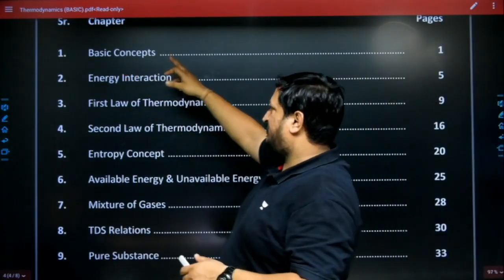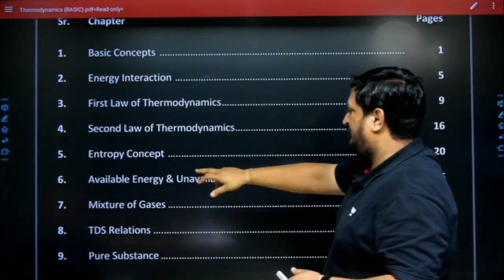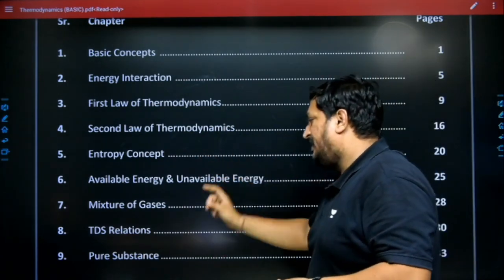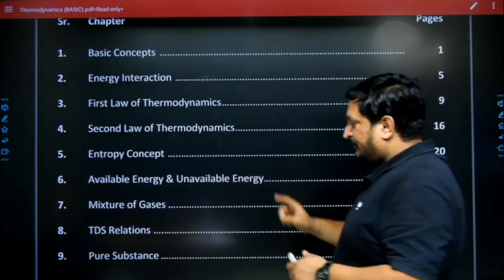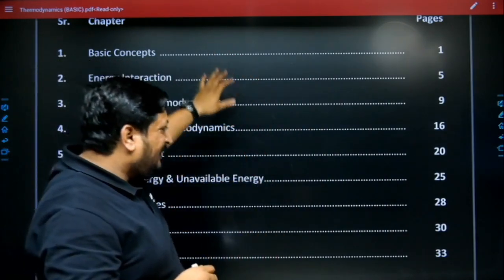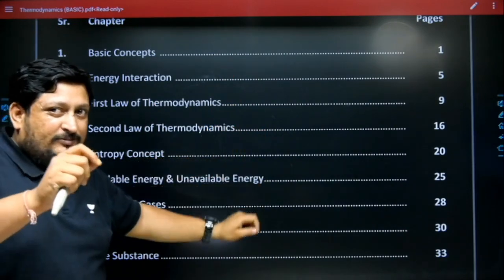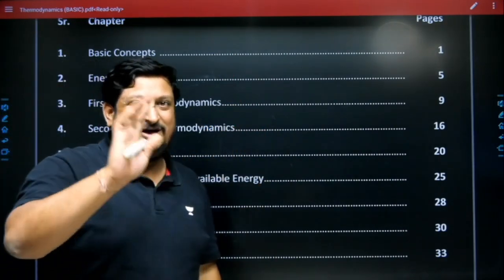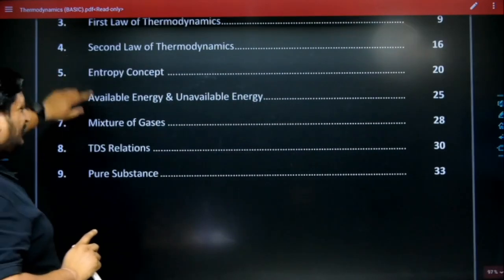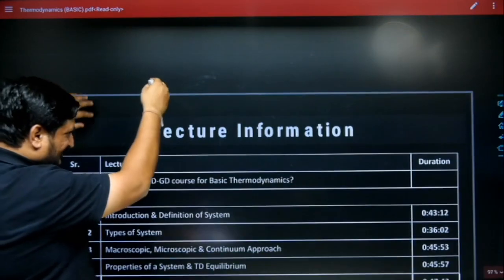Chapter one is basic concepts, chapter two is energy interaction, then first law, second law, entropy concept, available energy and unavailable energy, mixture of gases, thermodynamic relations, and pure substance. When you open this course you will get the complete workbook and study material of Gate Academy.